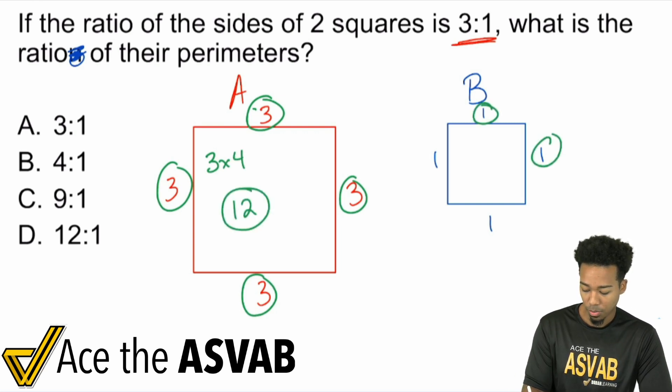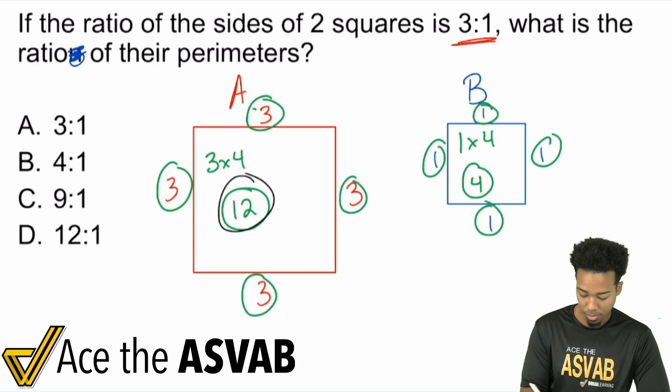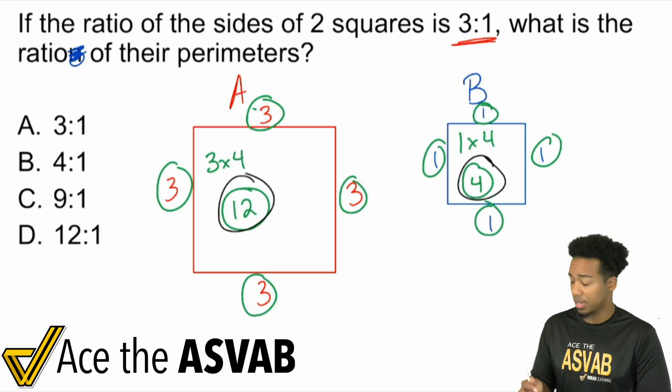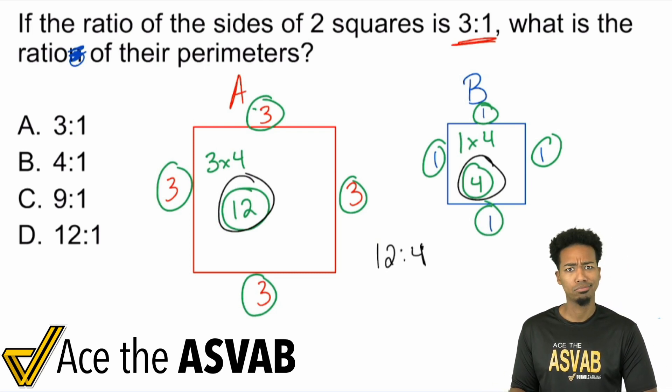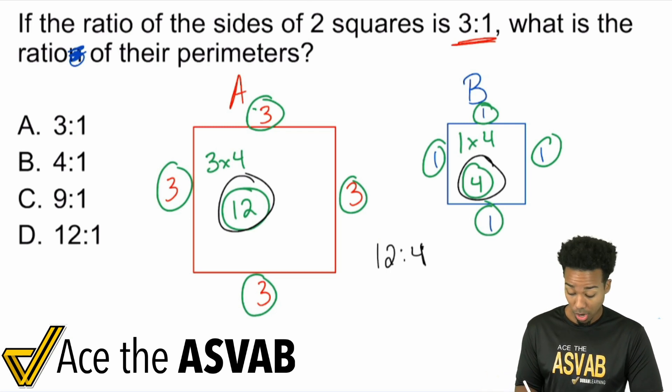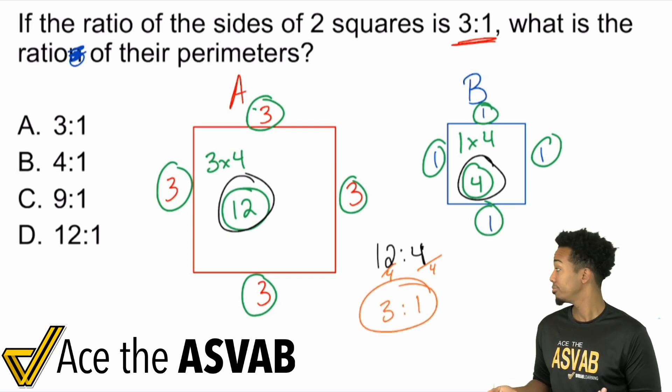Then here we have 1, 1, 1, and 1, which is the same thing as saying 1 times 4, and that's 4. So the perimeters of these shapes are 12 and 4. Let me circle them here. We have a ratio of 12:4. Can we simplify this? Absolutely. Both 12 and 4 are divisible by 4. If I cut them both by 4, I end up getting 3:1. Look at that.